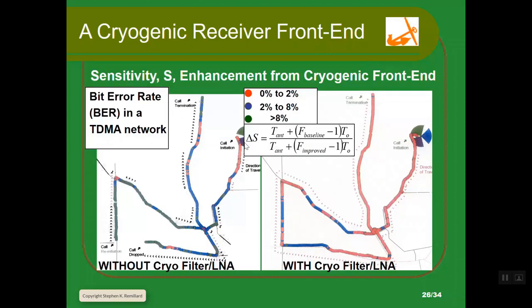This is a picture of what the thing looks like. It could go on a tower in front of the antenna cable, which is even better for noise reduction. There's a cryo cooler that makes it really cold. This is a cryostat, this big steel can.